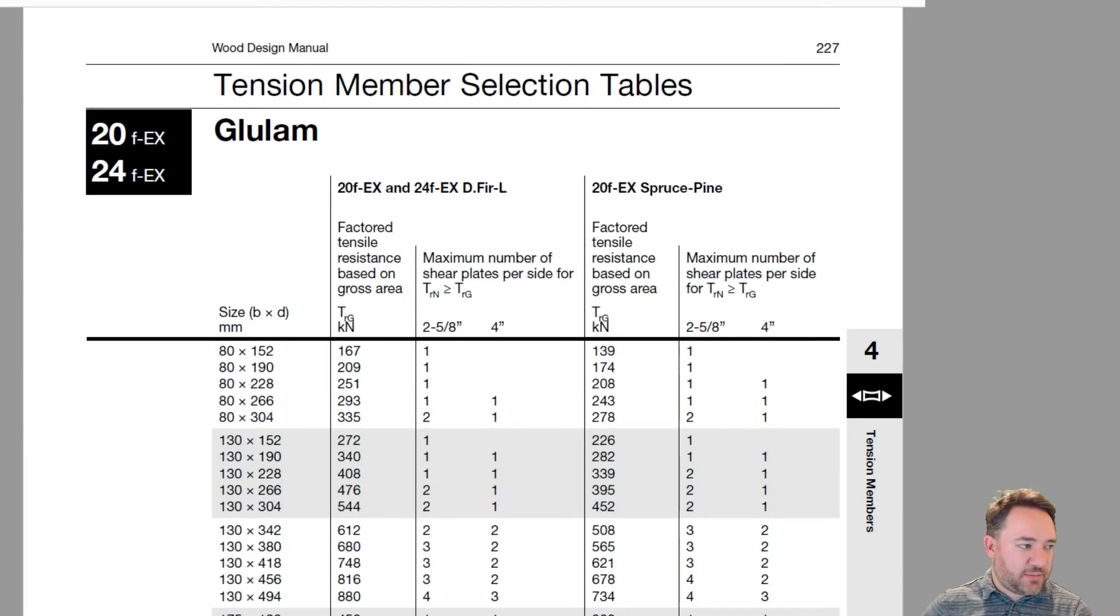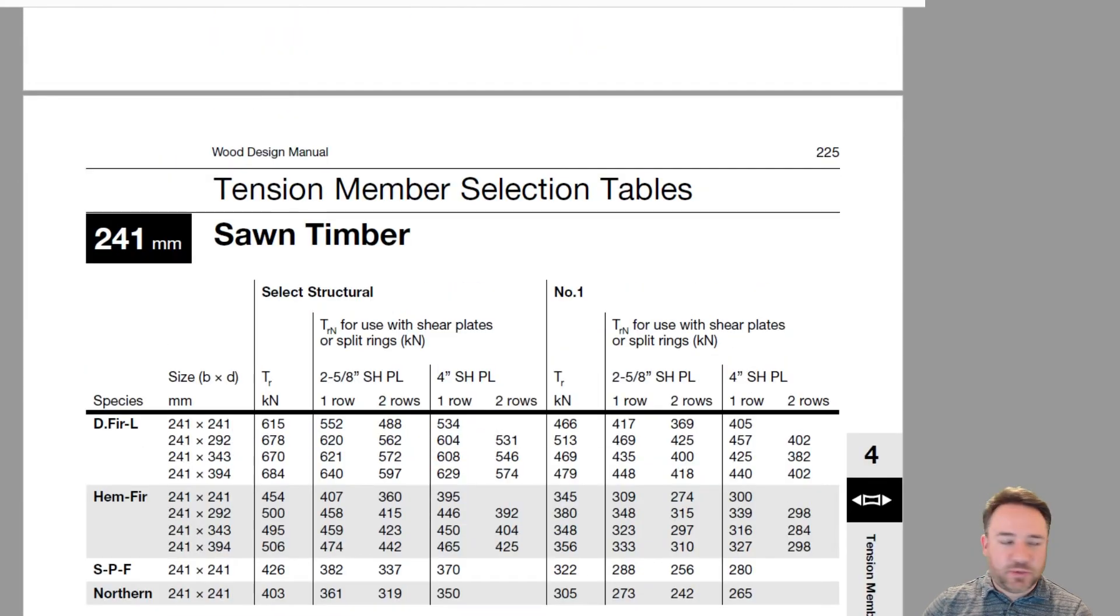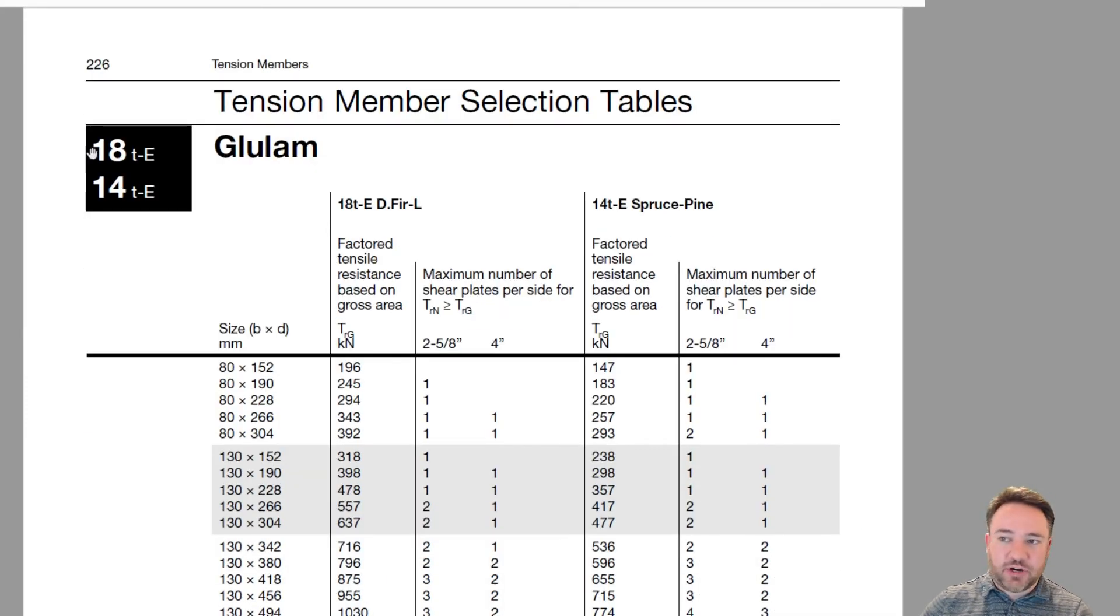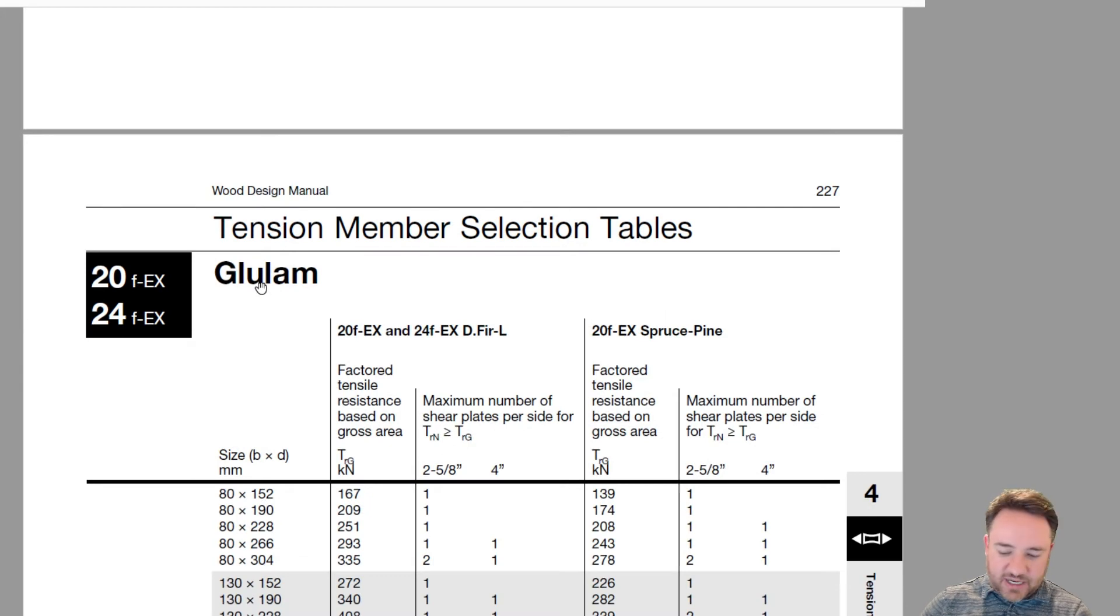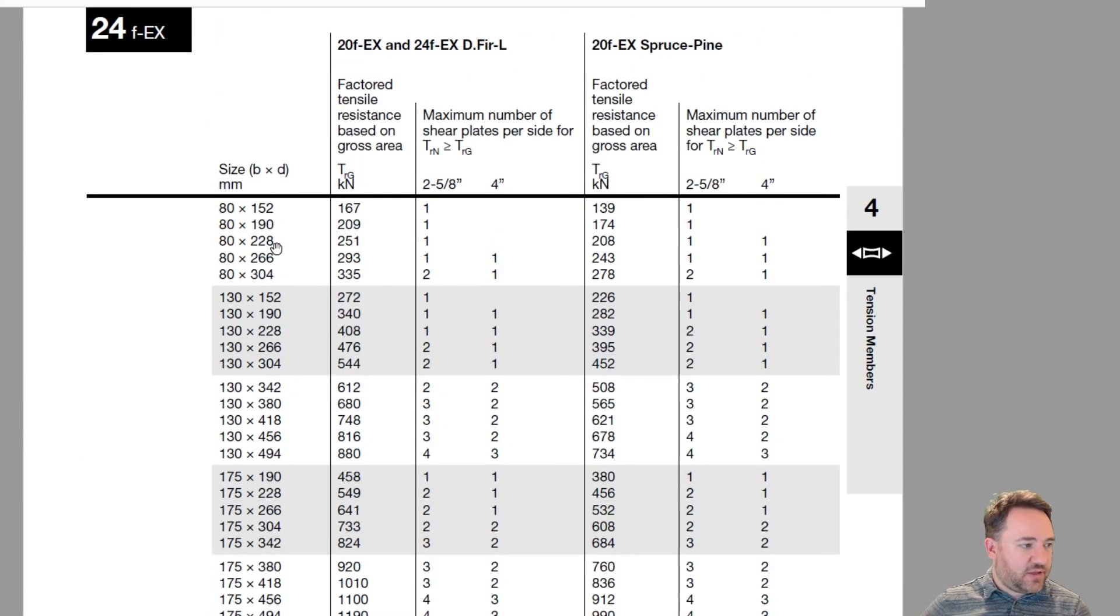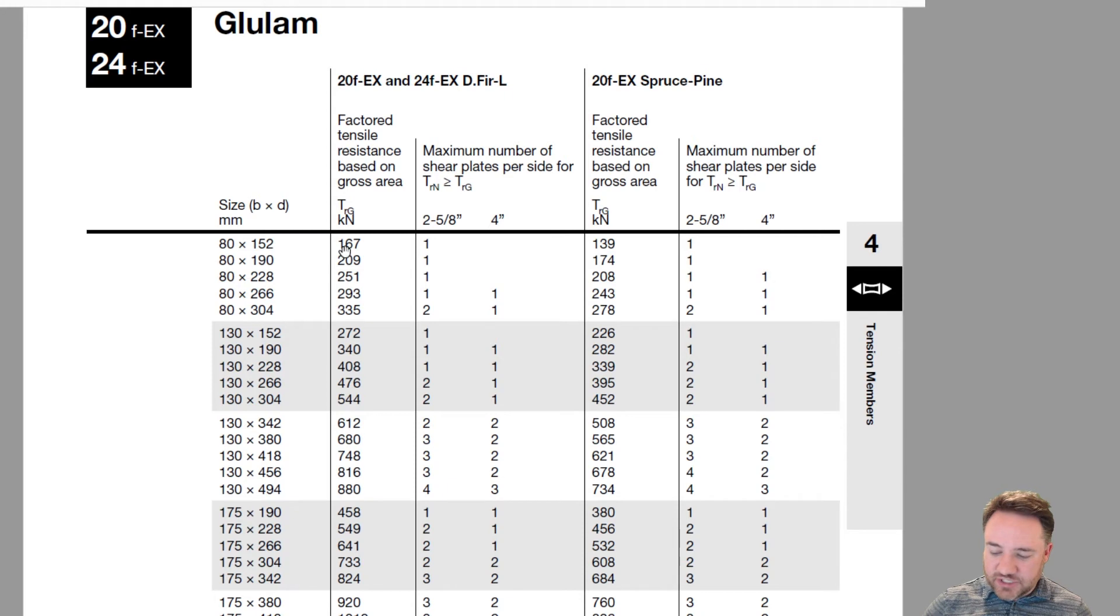Now I can go to the design tables in tension. Here we were before for sawn timber when we were trying to find a lumber size. If I just scroll down, I have this table which is for these two grades of glulam, 18T and 14TE. We actually are dealing with 20F EX grade, so I need to go to this table. Remember my factored resistance target was 314, so I can just read down the list here. Here's one option, 335, which is greater than 314, and that's an 80 by 304. Here we have another option, 340, which is greater than 314, which is a 130 by 190.